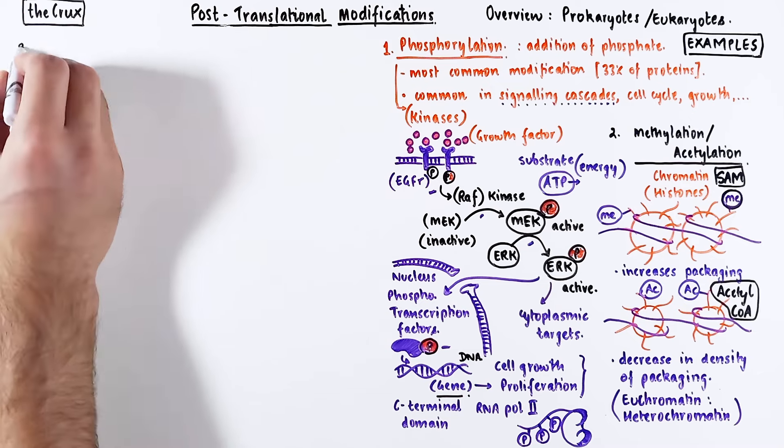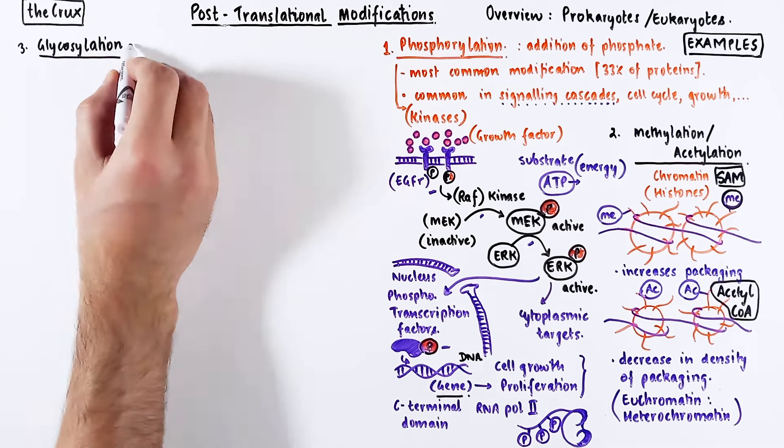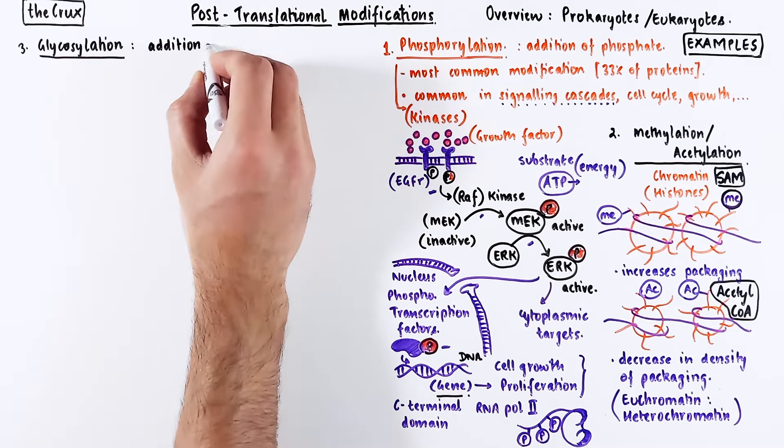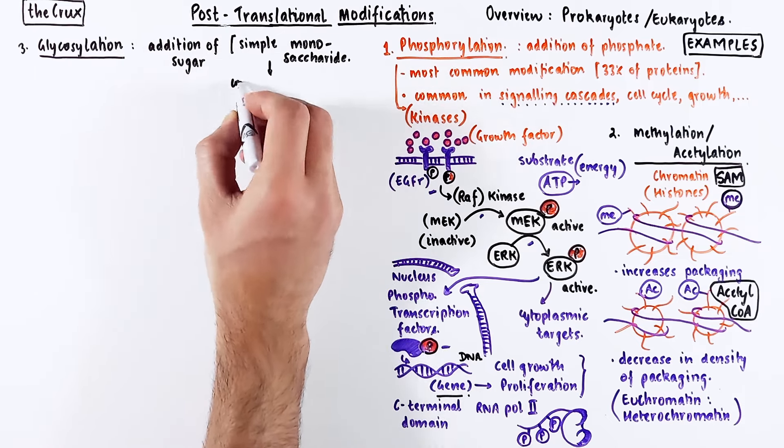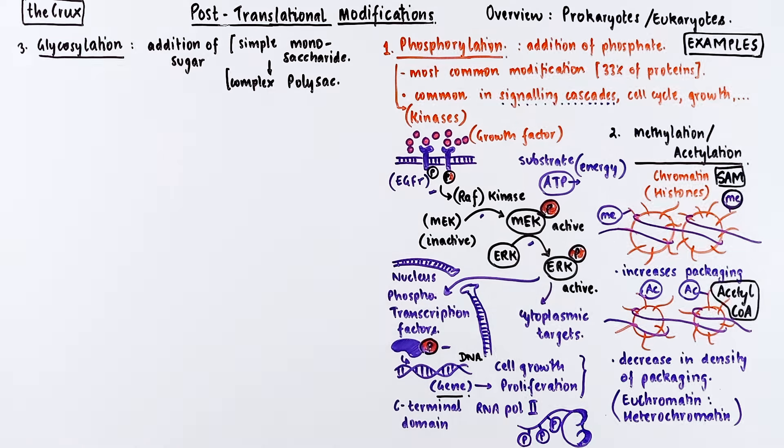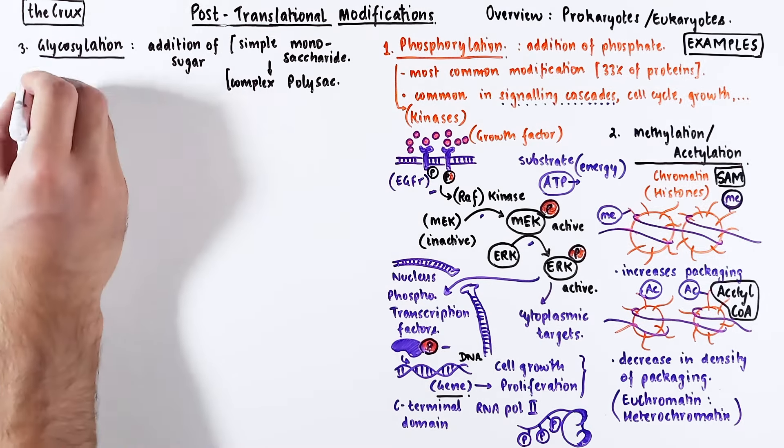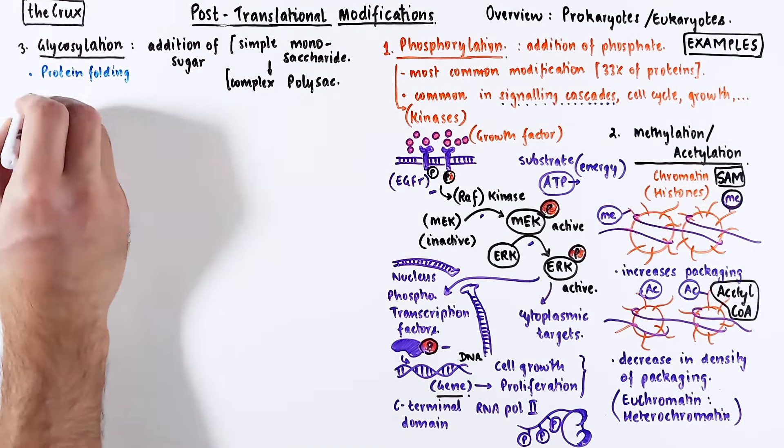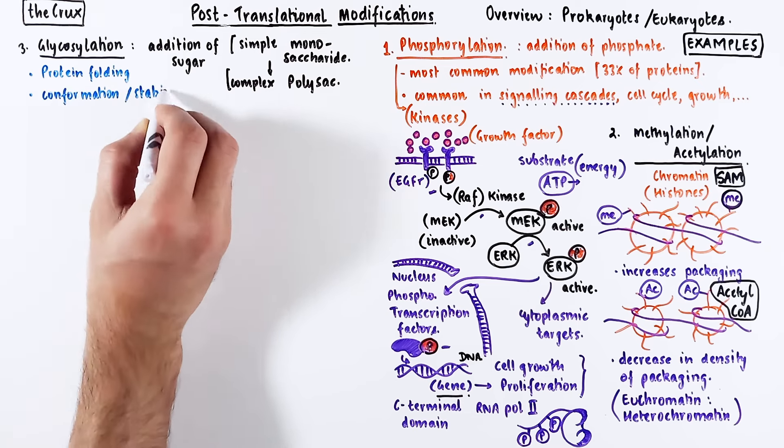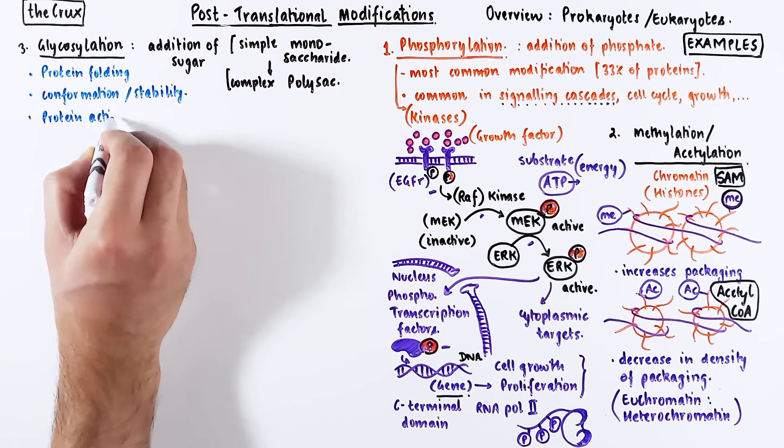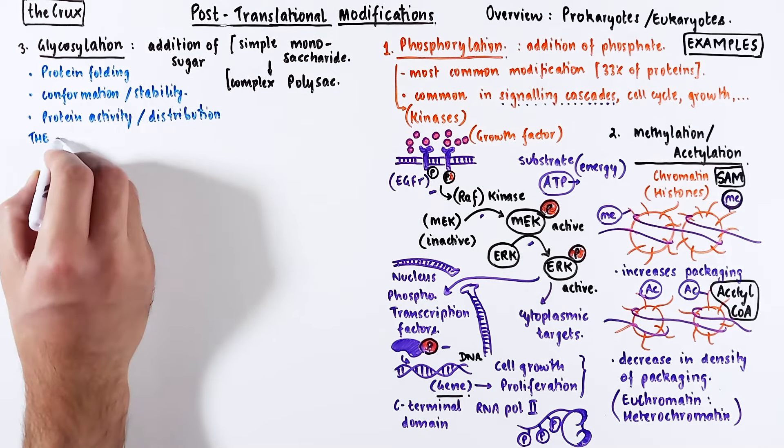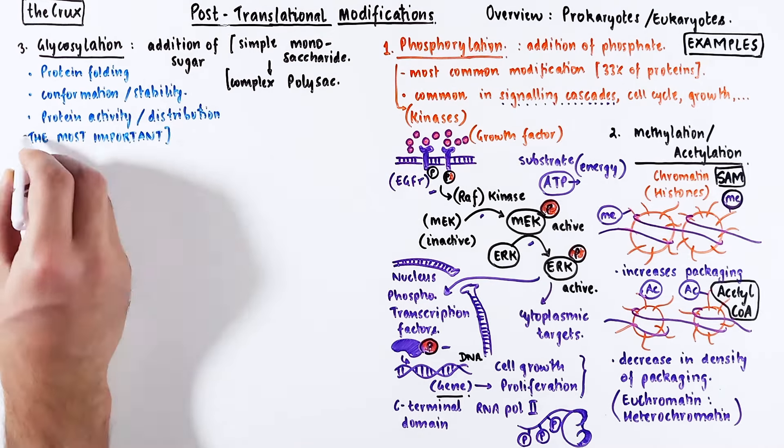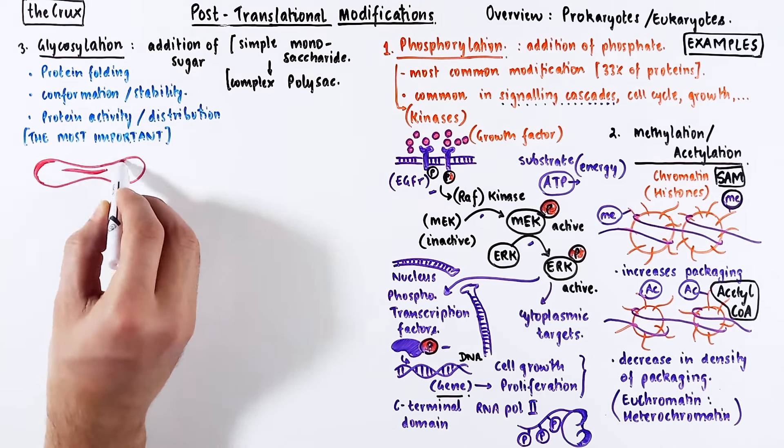The third modification is glycosylation, which is the addition of a sugar molecule. This sugar can be a simple monosaccharide or complex polysaccharide. Glycosylation is involved in protein folding, conformation, stability, activity, and distribution. After phosphorylation, it's perhaps one of the most important post-translational modifications.